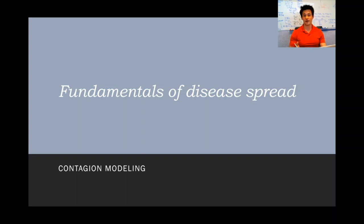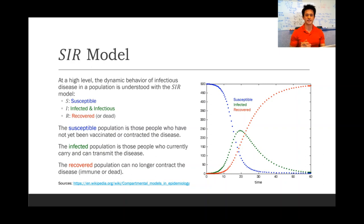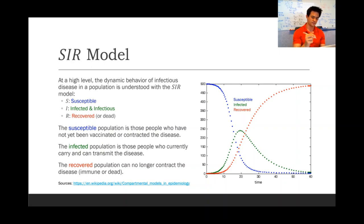Now we'll talk about the fundamentals of disease spread. This one's going to be a little bit mathematical, but stick with me, it's worth it. So at a high level, the dynamic behavior of infectious disease in a population is understood using the SIR model.